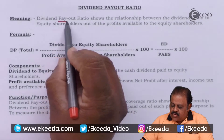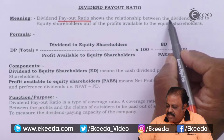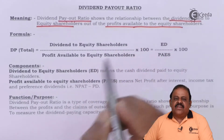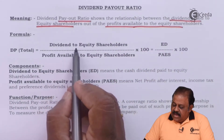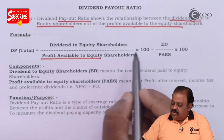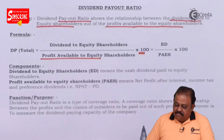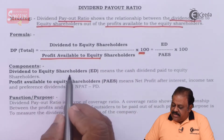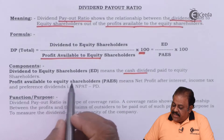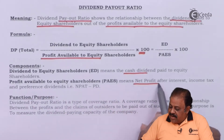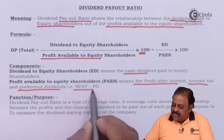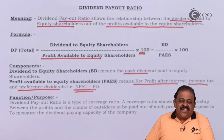Dividend payout ratio shows the relationship between dividends paid to equity shareholders out of the profits available to equity shareholders. The formula is: dividend paid to equity shareholders divided by profit available to equity shareholders, multiplied by 100. Dividend to equity shareholders means cash dividend paid to equity shareholders. Profit available to equity shareholders means net profit after interest, income tax, and preference dividend — that is, net profit after tax minus preference dividends.